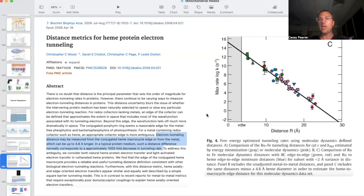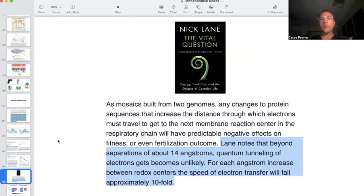And this is exactly what it's showing here. The max rate log exponentially falls down as the distance between the proteins are wider. In a typical protein medium, such a distance difference normally corresponds with an approximately 1000 fold decrease in tunneling, which means that for every 4.8 angstroms in distance, you lose 1000 fold tunneling rates. This is huge.